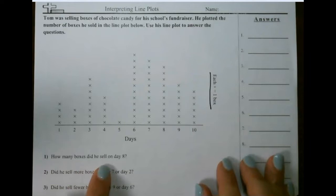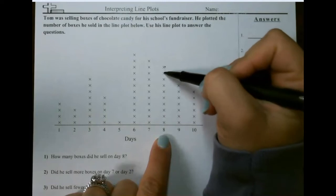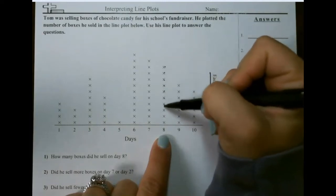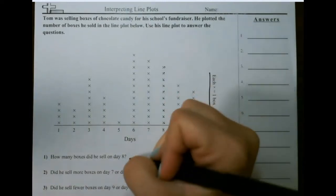Notice over here that each x represents one box that he sold. How many boxes did he sell on day 8? So we take a look at the 8 and you count the x's. So that would give me 10.